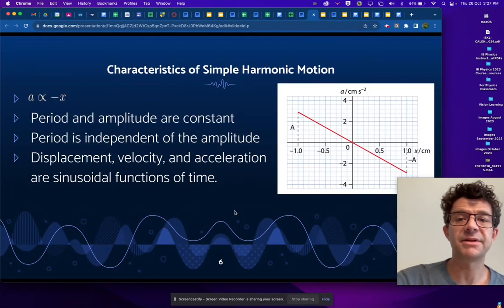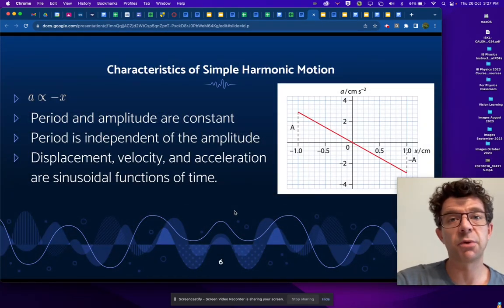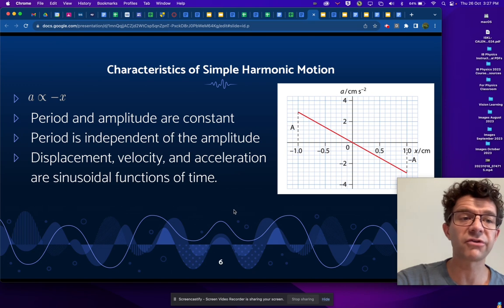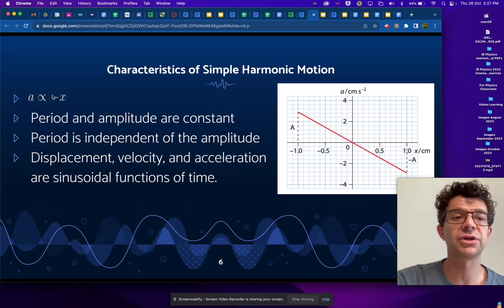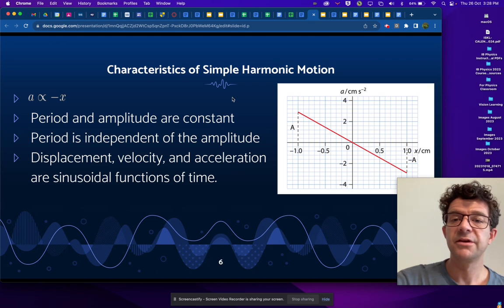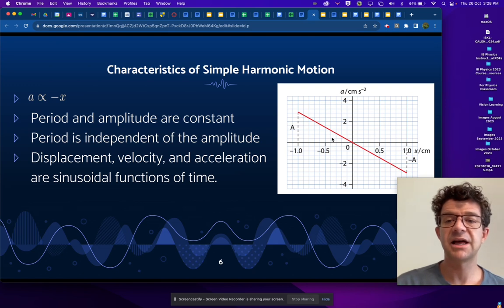When that happens, of course, the acceleration is proportional to the force. And so the definition of simple harmonic motion is really that the acceleration is proportional to and opposite of the displacement. So if we looked at a graph, for example, of the acceleration versus displacement, it would have this line with a negative slope.